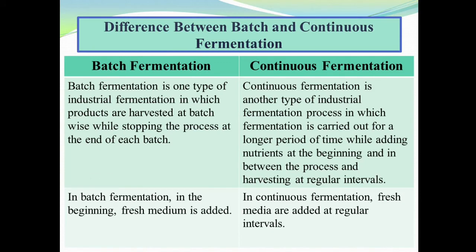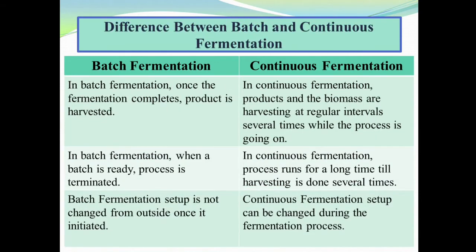In batch fermentation, once the fermentation completes, the product is harvested. While in continuous fermentation, products and the biomass are harvested at regular intervals several times while the process is going on. In batch fermentation, when a batch is ready the process is terminated, while in continuous fermentation the process runs for a long time until harvesting is done several times.